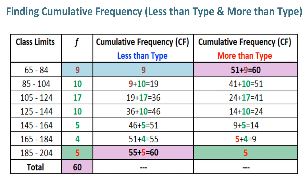Finding cumulative frequency, less than type. The first frequency F1, which is 9, becomes the first cumulative frequency less than type from the top, highlighted in light sky blue. For the second cumulative frequency less than type, we add F2 (which is 10) with the preceding frequency F1 (which is 9) to get 19. In this way you find the remaining 5 cumulative frequencies. The last, or 7th, cumulative frequency becomes the total frequency, which is 60, highlighted in purple.